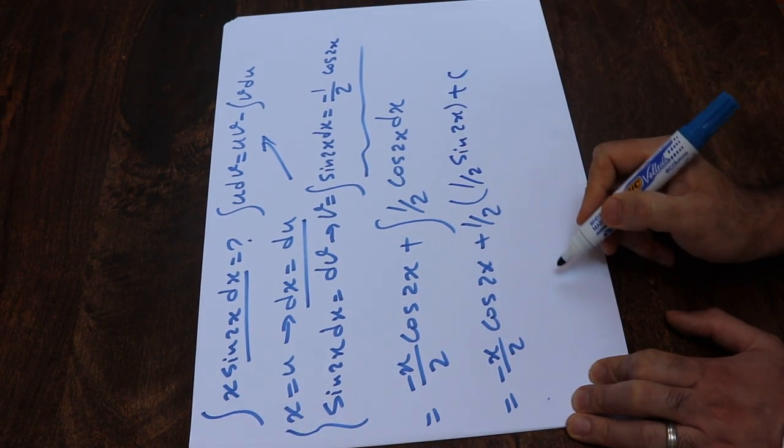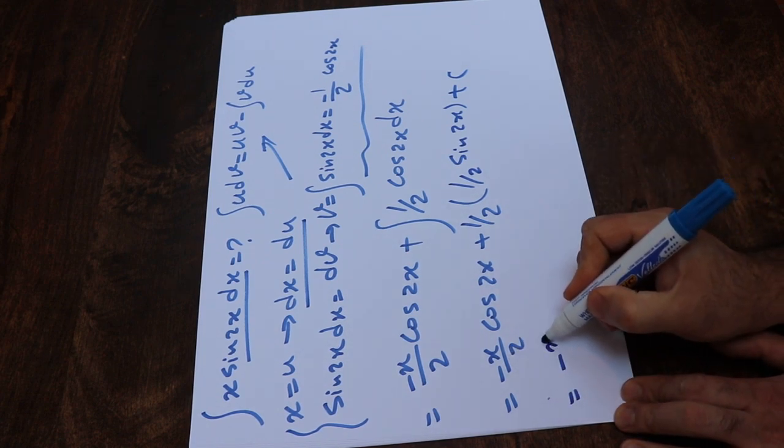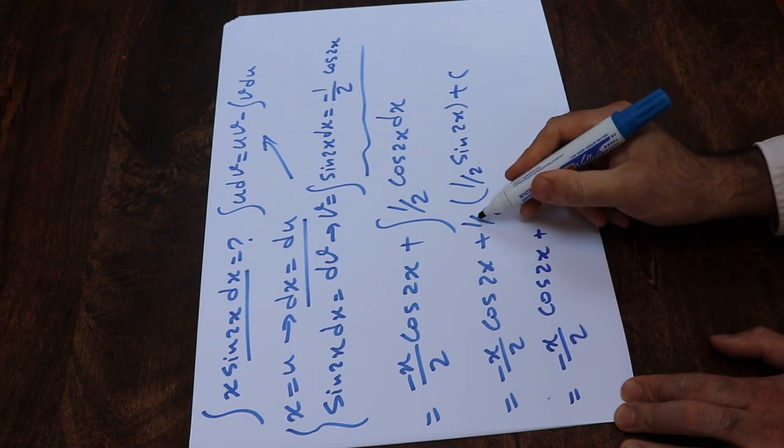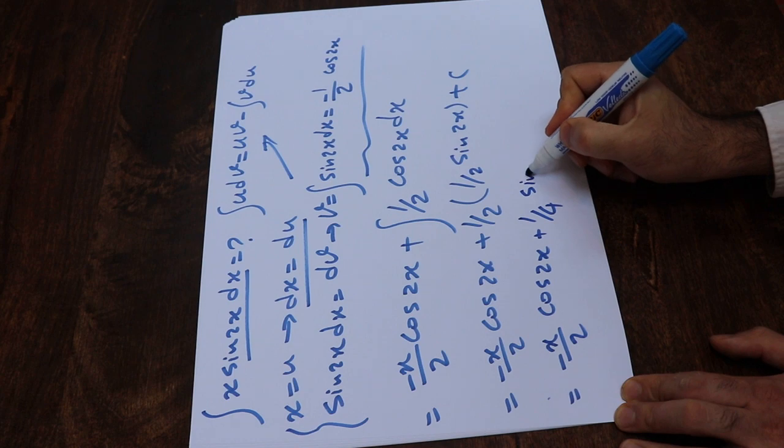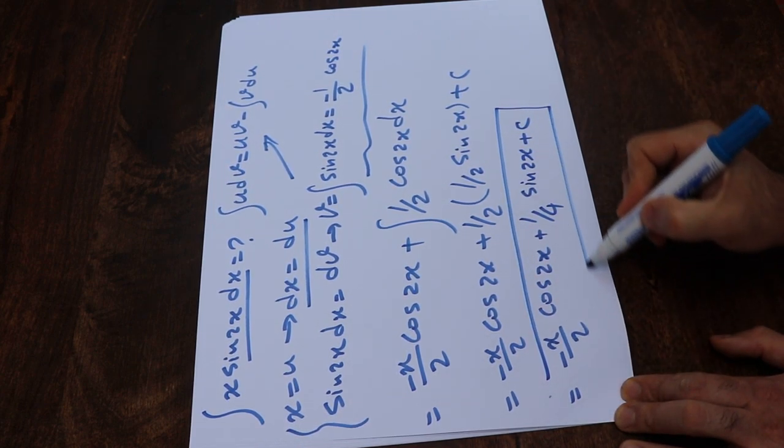Plus c, which is the constant of the integral. Therefore, this one will be equal to minus x divided by 2 cosine 2x plus 1 divided by 2 times 1 divided by 2 is 1 divided by 4, sine 2x plus c, which is the constant of the integral.